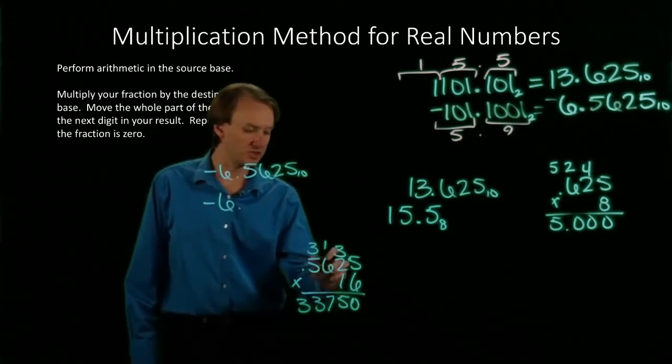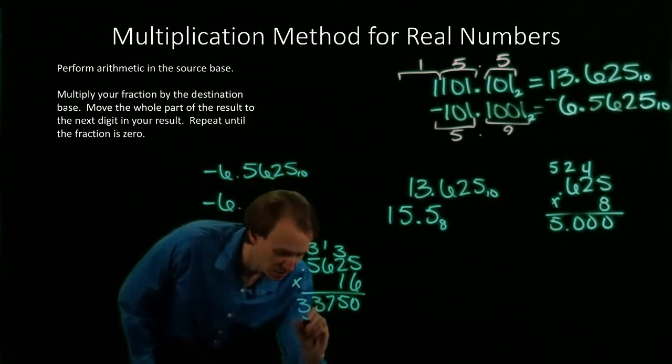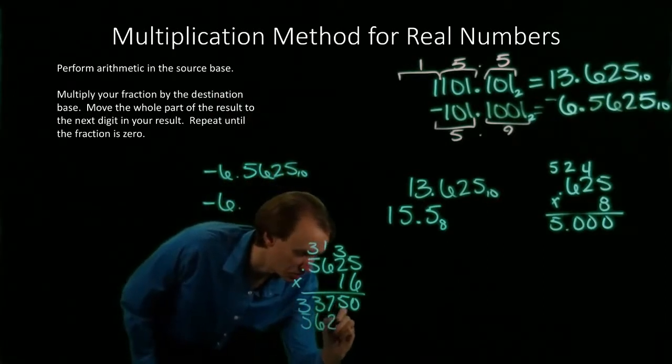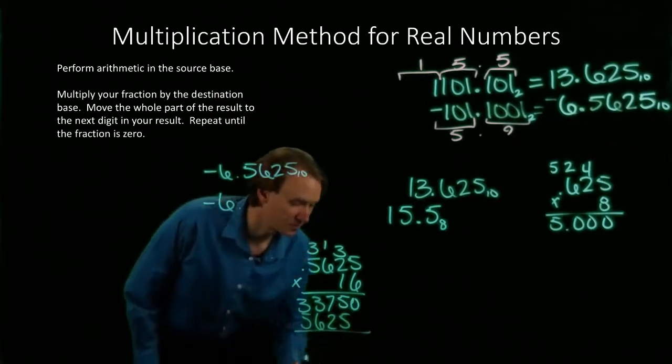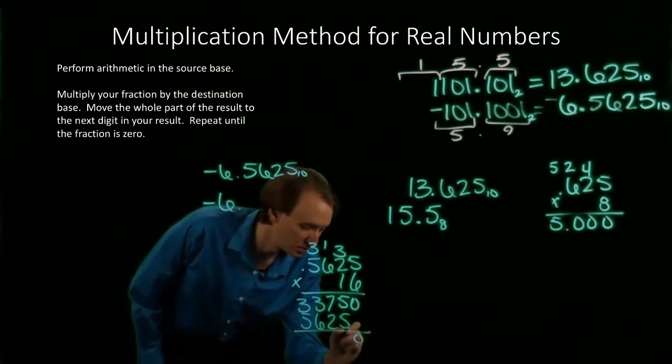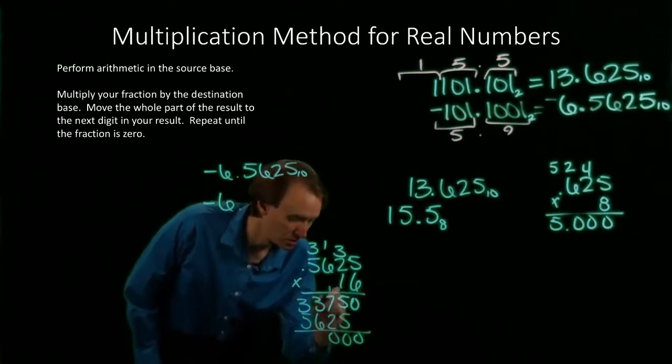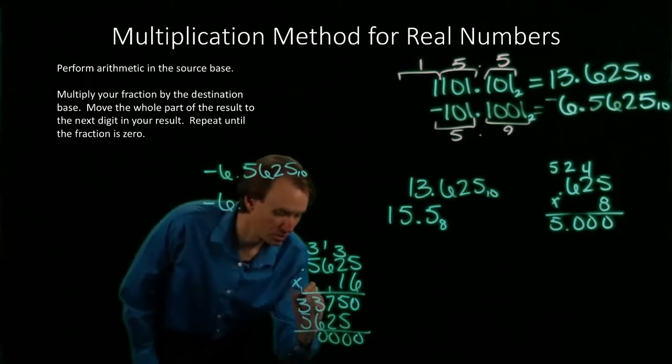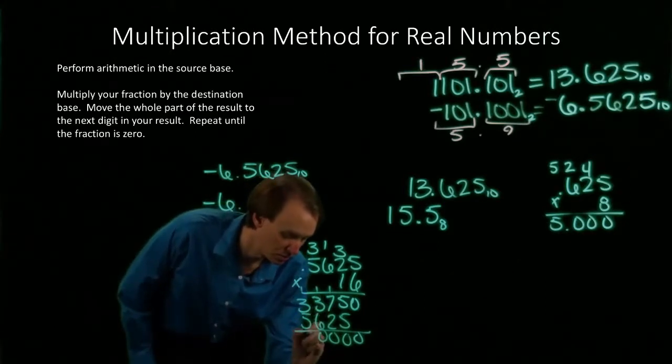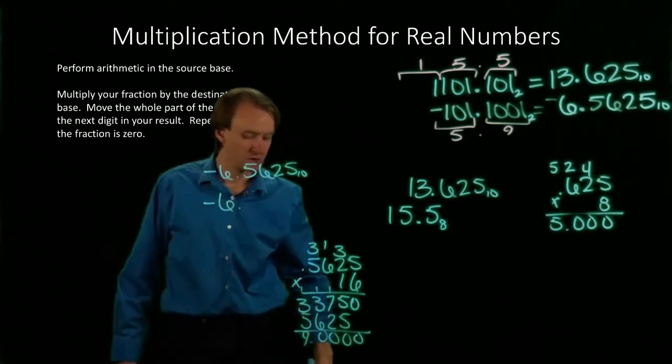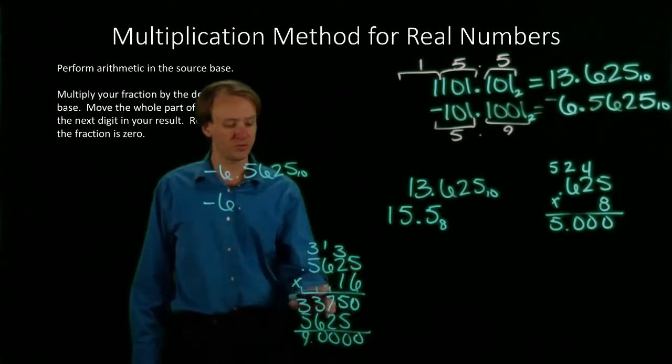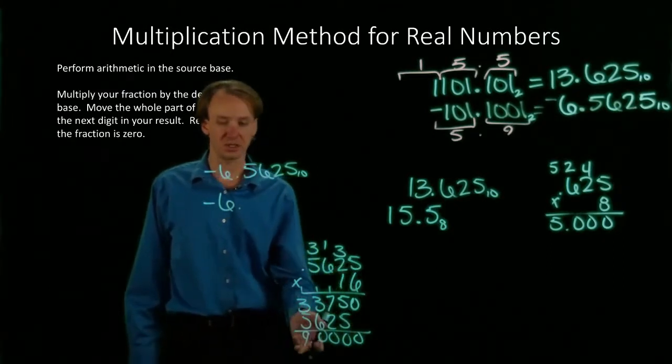And then 1 times 56, 25 is 56, 25. So .5625 times 16 is 9.